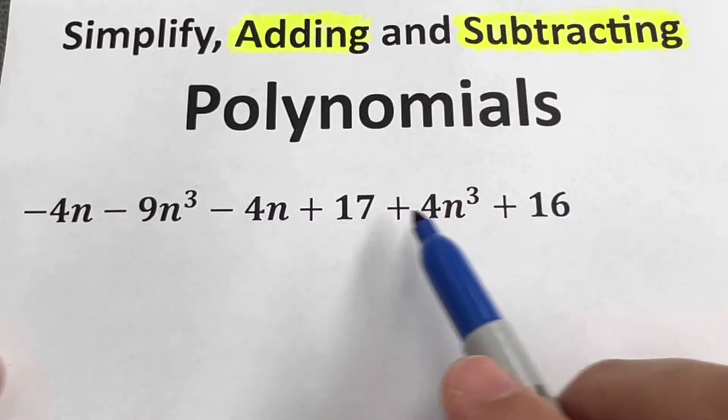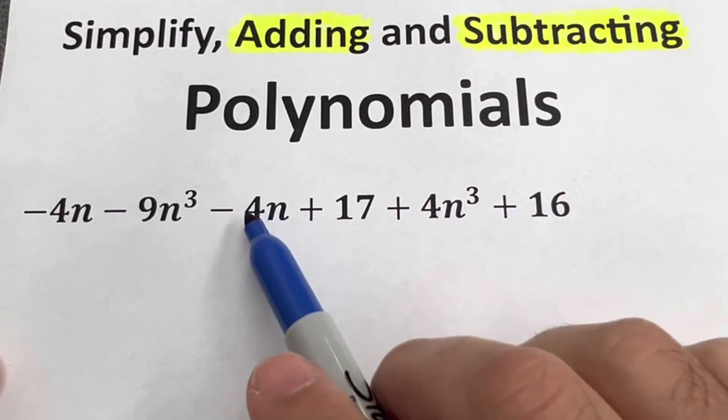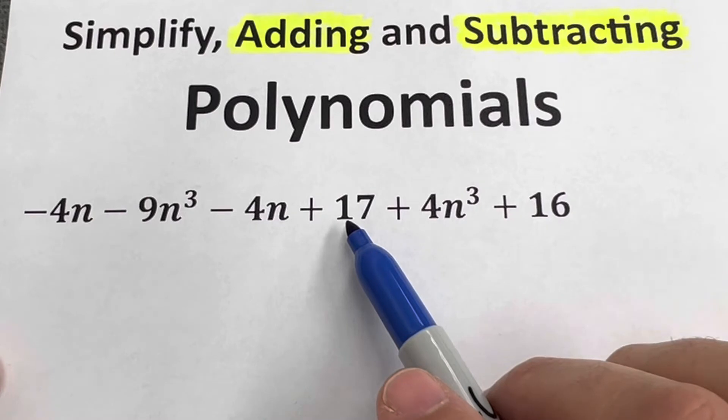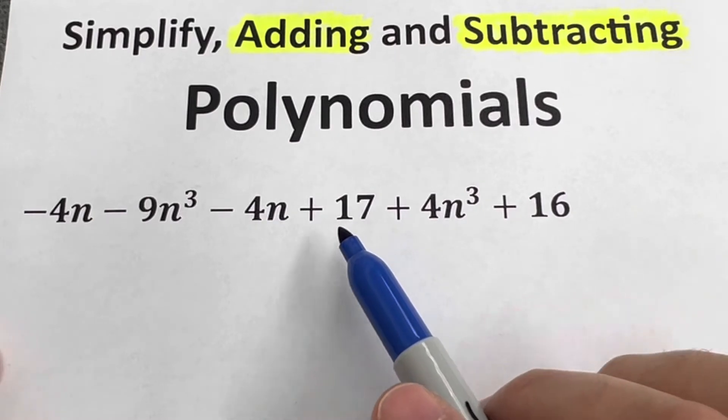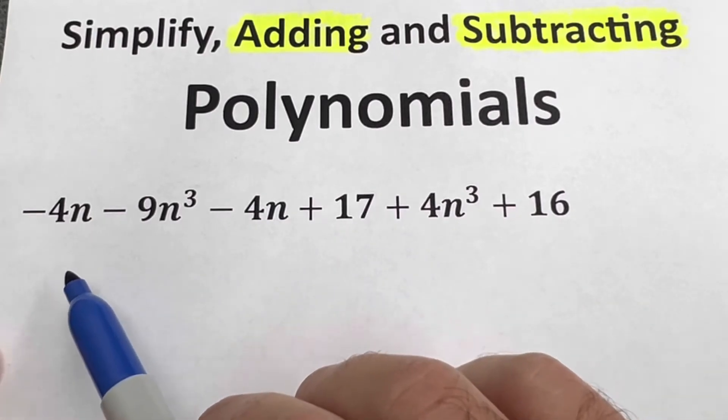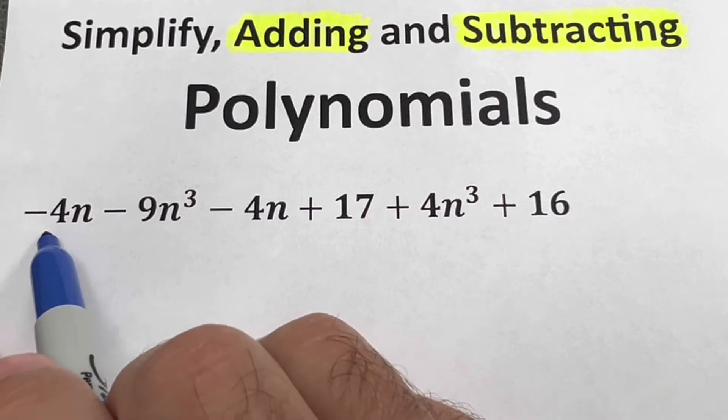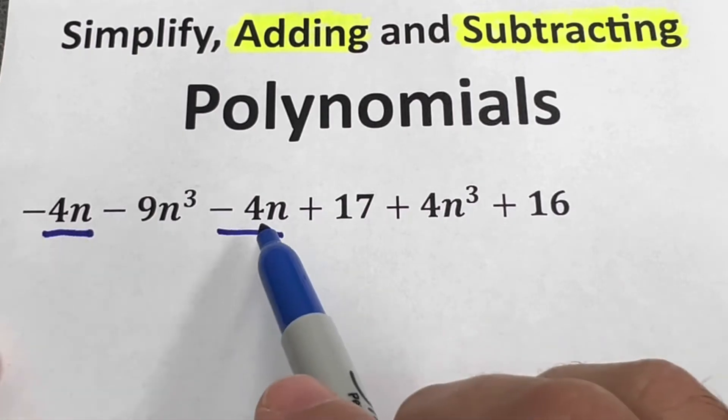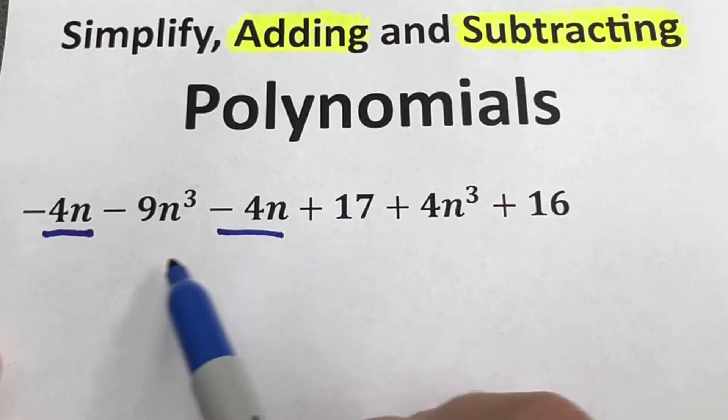Each of the terms are separated by a plus or a minus. So -4n is a term, 17 is a term - it's a constant term but it's a term. What we're going to do now is underline like terms. I have -4n here, -4n, and that's it.